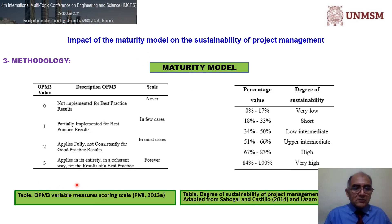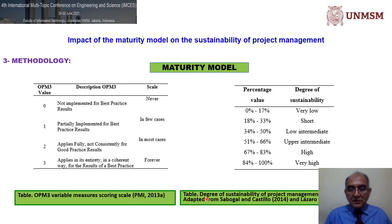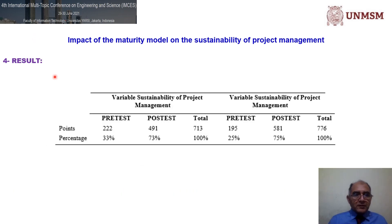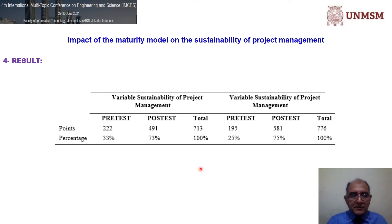We can see two tables: the OPM3 variable measures scoring scale, and the table for the degree of sustainability of project management. Here we show the results of the variables analyzed.